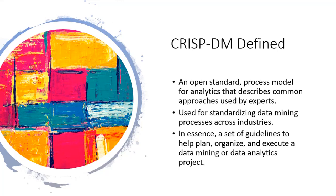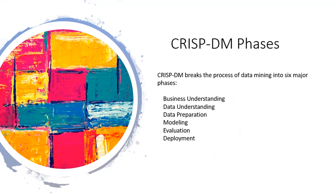It reminds many people of the systems development life cycle for more general purpose information systems projects. The six phases of CRISP-DM include business understanding, data understanding, preparing data, creating models, evaluate the suitability of those models and the results, and deployment.